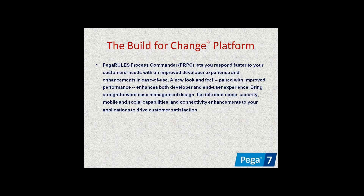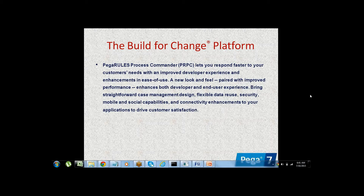Pega is also called the 'Build for Change' platform — that is the caption for the Pega logo. Using this platform we can build applications faster, with ease, and it will increase the performance of applications in a flexible way. All features like faster development, better performance, and more security are internally available.